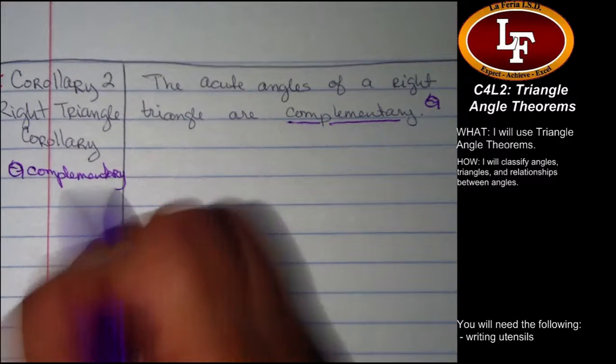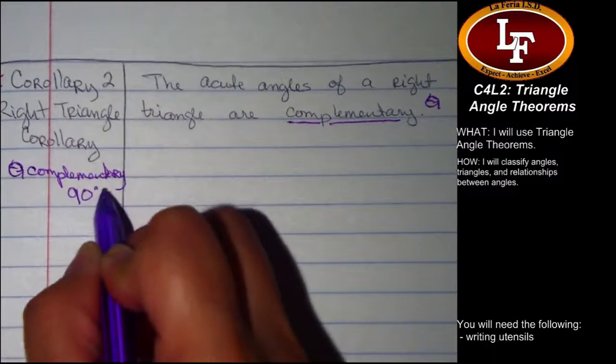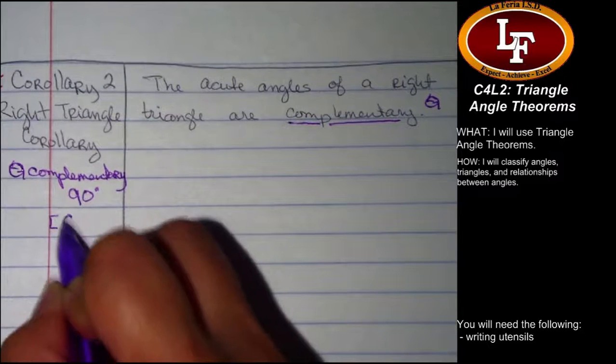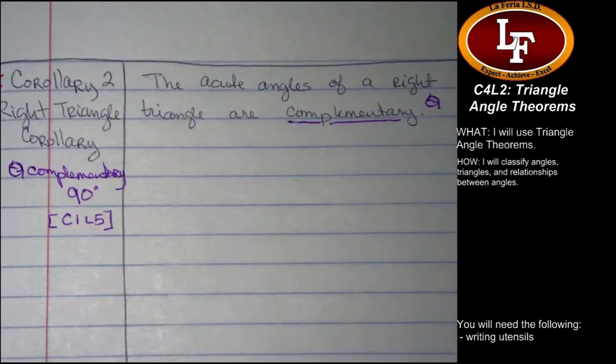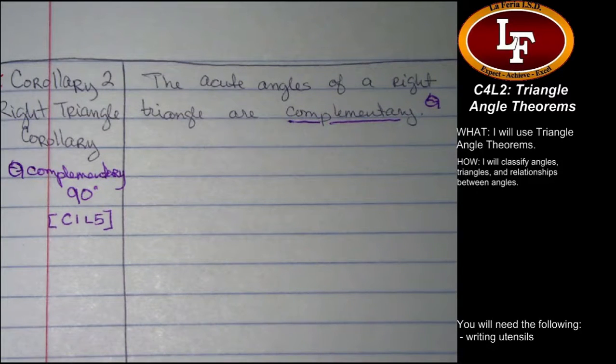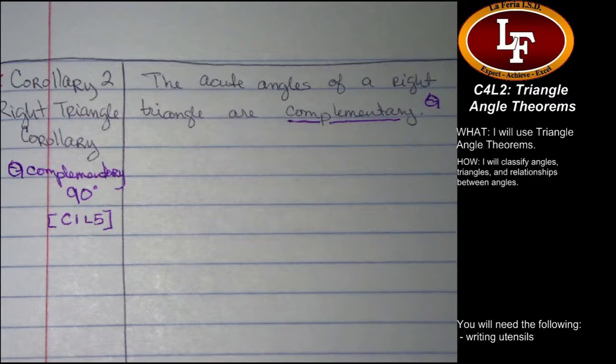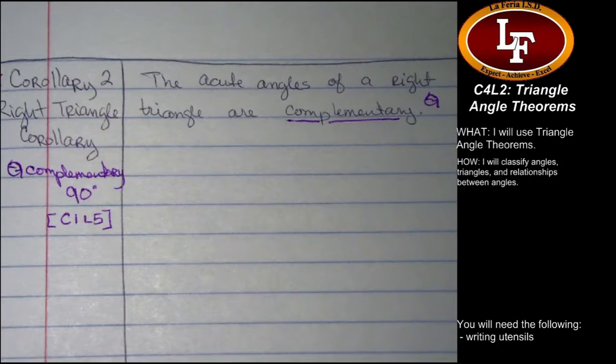Second corollary, the second thing that falls out of the triangle angle sum theorem is all about the right triangle. Corollary number two, right triangle corollary. And it says this. The acute angles of a right triangle are complementary. What does complementary mean? 90 degrees. Complementary, in case you forgot, jot it down over here. Our big takeaway was 90 degrees. And you can go back to chapter one, lesson five, angle relationships.